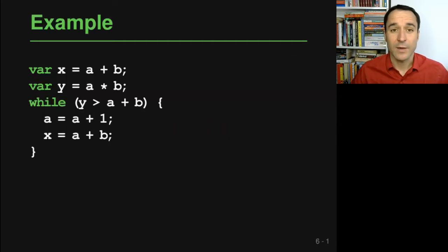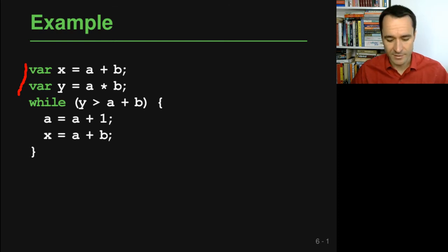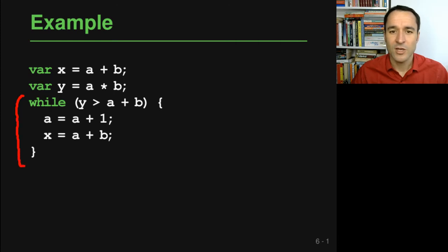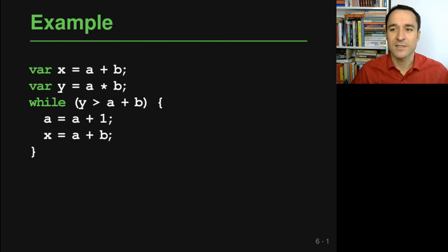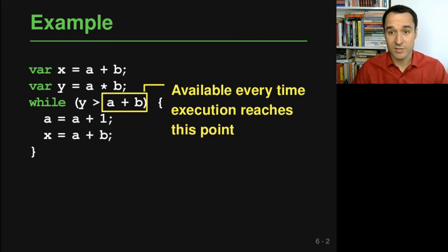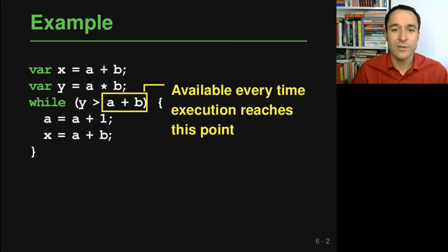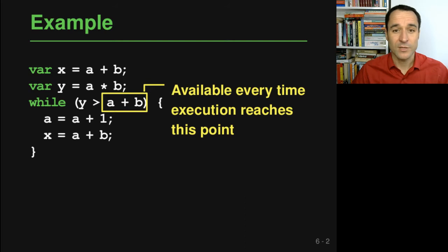Let's make this more concrete with a piece of JavaScript code. The code computes expressions a+b and a*b and stores results into variables x and y. Then there's a while loop that checks some condition, and inside the loop the values of a and x are overwritten. In this code, the expression a+b is available every time execution reaches the while loop condition, because a and b have not changed since the last time it was computed.